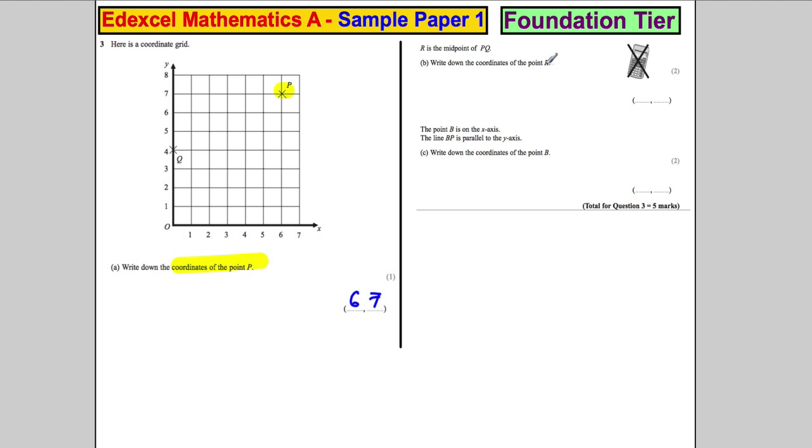Now, R is the midpoint of PQ, write down the coordinates of R. I'm just going to draw a line in here, just to make my life a little bit easier. And I wonder if you can see the midpoint when you're doing it. Is it straightforward to see?